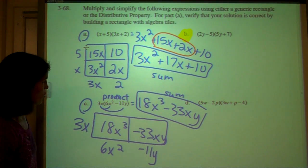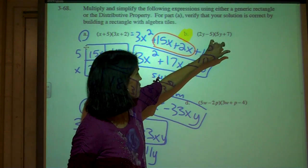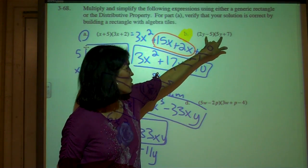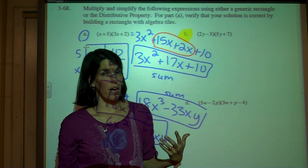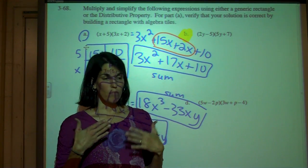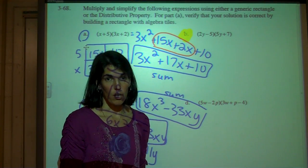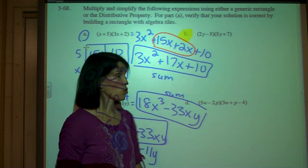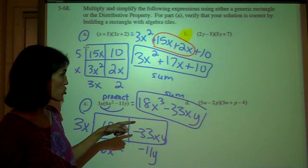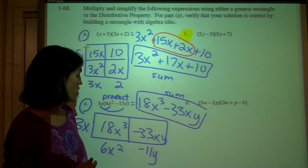So the last thing I would like for you to do is try problem B using the generic rectangle or the area model, and then I'm going to take a look at this and see how you do. We are going to work on this tomorrow, so don't feel like you have to have this down pat. You need to make an effort to learn this, and rewind the video if you're having trouble. Just try all the highlighted ones that I had on this video.